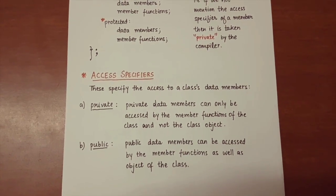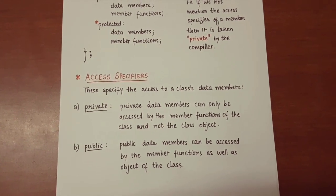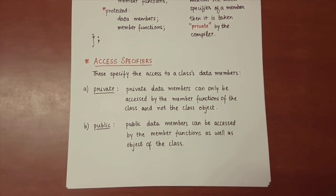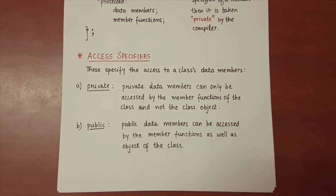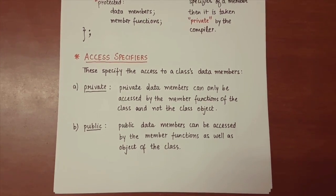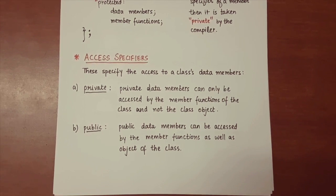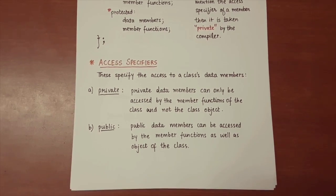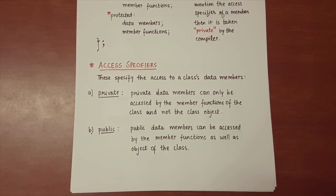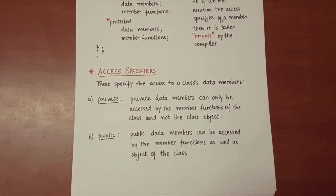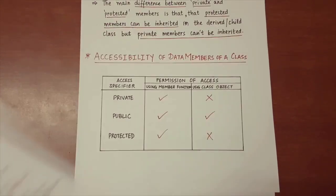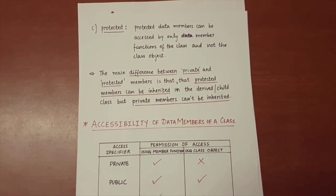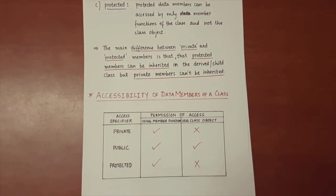Access specifiers are mainly used to specify the access to data members of a class. There are three: private, public, and protected. Private means a data member can only be accessed by the member functions of the class and not by the class object. Public means data members can be accessed by both member functions and the object of the class. Protected means data members can only be accessed by member functions of the class and not the class object.